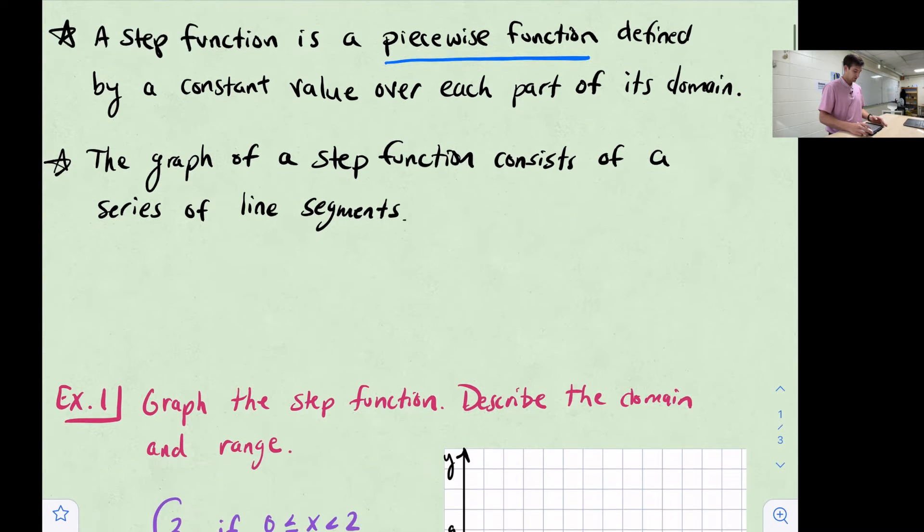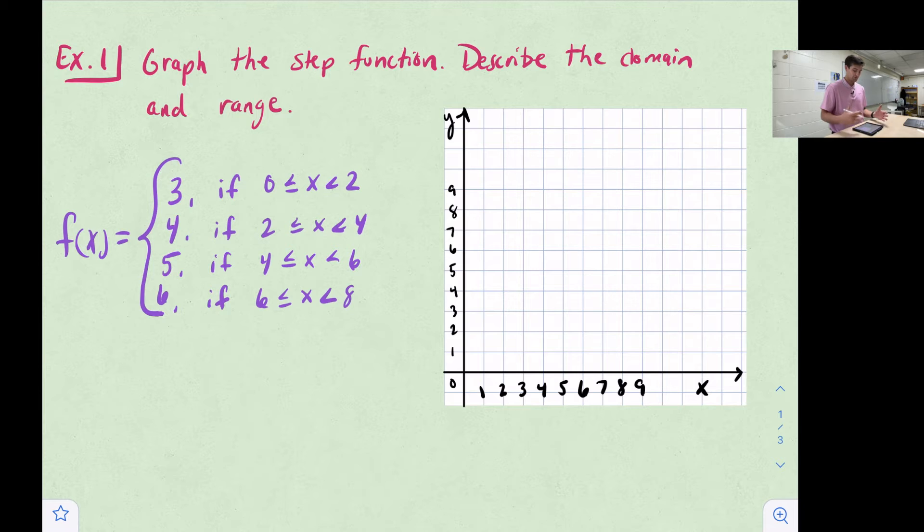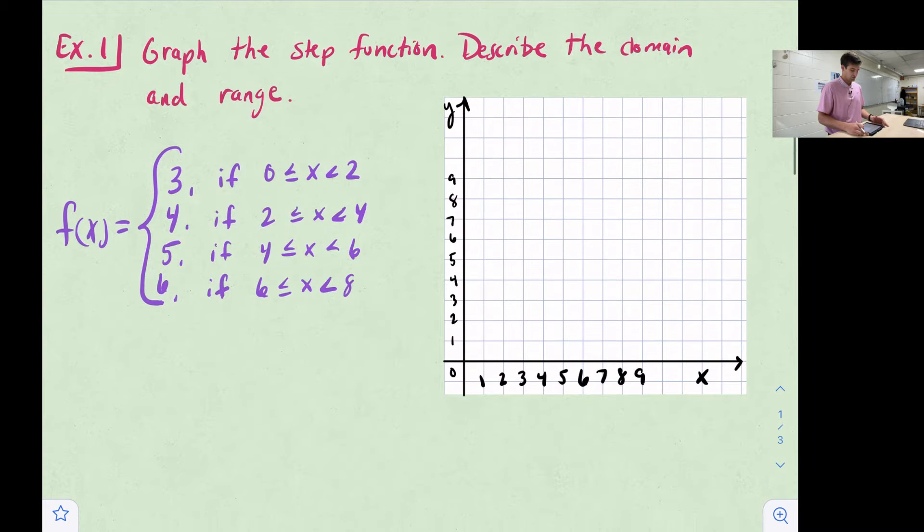We're going to look at two examples. Example number one wants us to graph the step function and then describe the domain and range. We look at our step function over here on the left, and we see f of x equals three if x is between zero and two, four, five, six. It looks like a piecewise function in the way it's written. Now we're going to graph it.